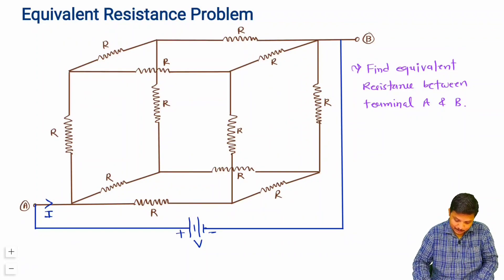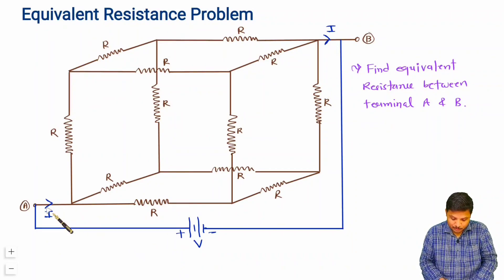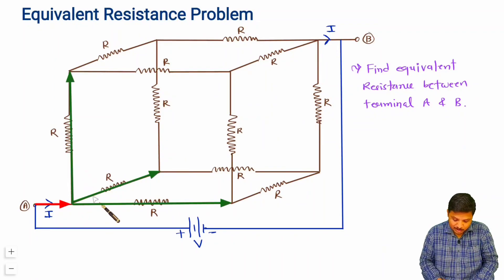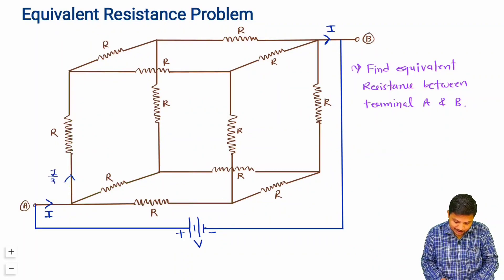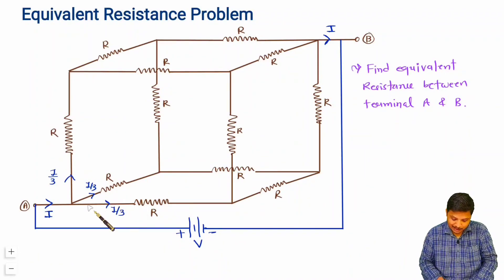Current I exits from terminal B. Since the network is symmetric, current I entering at A gets divided equally into three branches, so each branch carries I/3. This applies to all three branches from terminal A, as the network is symmetric and all resistance values are equal.